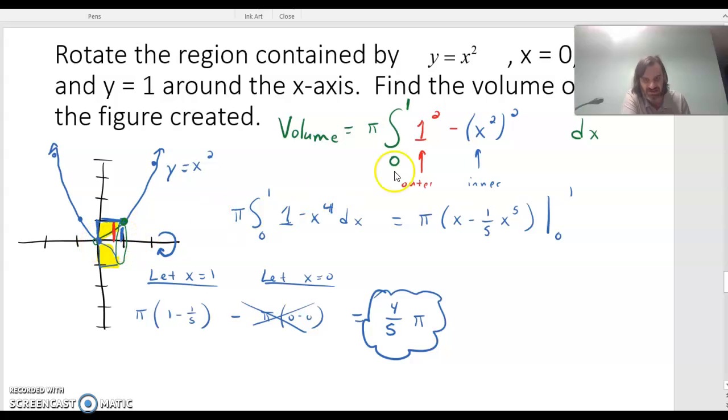So this thing runs from 0 to 1 in the x direction. So that's my a and my b. And then we need the outer radius. It goes all the way out to y equals 1. So that radius is 1. And the inner radius is the parabola x squared. So that's our inner radius.